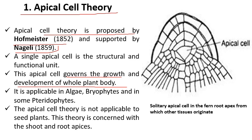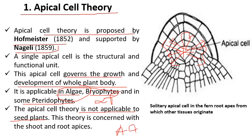Basically, in apical cell theory, there will be one cell and this cell will keep on dividing. It can divide anticlinally or periclinally, and will give rise to different parts of the plant — that is, the stem, leaf, and internal tissue of the plants. They also keep on dividing and produce different cells or tissue. Keep in mind that it is applicable only in algae, bryophytes, and some pteridophytes, which are lower plants. The drawback is that it is not applicable to seed plants, which include angiosperms and gymnosperms.